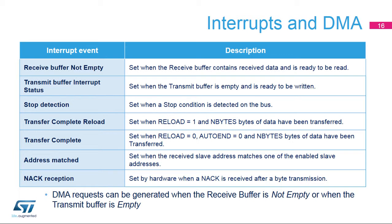Several events can trigger an interrupt. The receive buffer not empty flag is set when the receive buffer contains received data and is ready to be read. The transmit buffer interrupt status is set when the transmit buffer is empty and is ready to be written. The stop detection flag is set when a stop condition is detected on the bus. The transfer complete reload flag is set when the reload bit is set and N bytes of data have been transferred. The transfer complete flag is set when the reload and auto end bits are cleared and N bytes of data have been transferred. The address match flag is set when the received slave address matches one of the enabled slave addresses. The NACK reception flag is set when a not acknowledge is received after a byte transmission. DMA requests can be generated when the receive buffer not empty or transmit buffer empty flag is set.